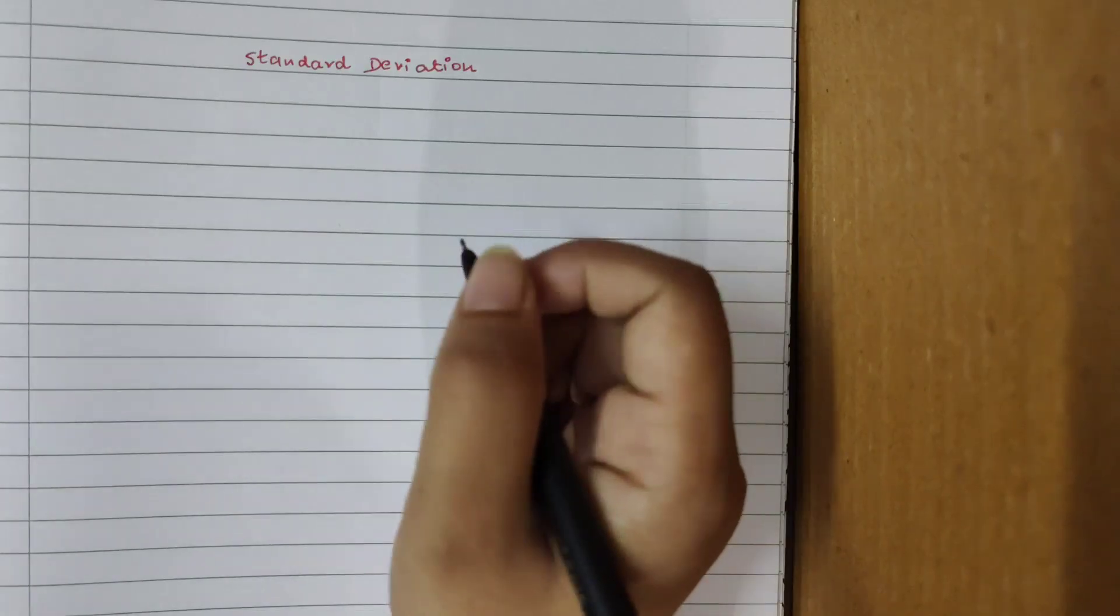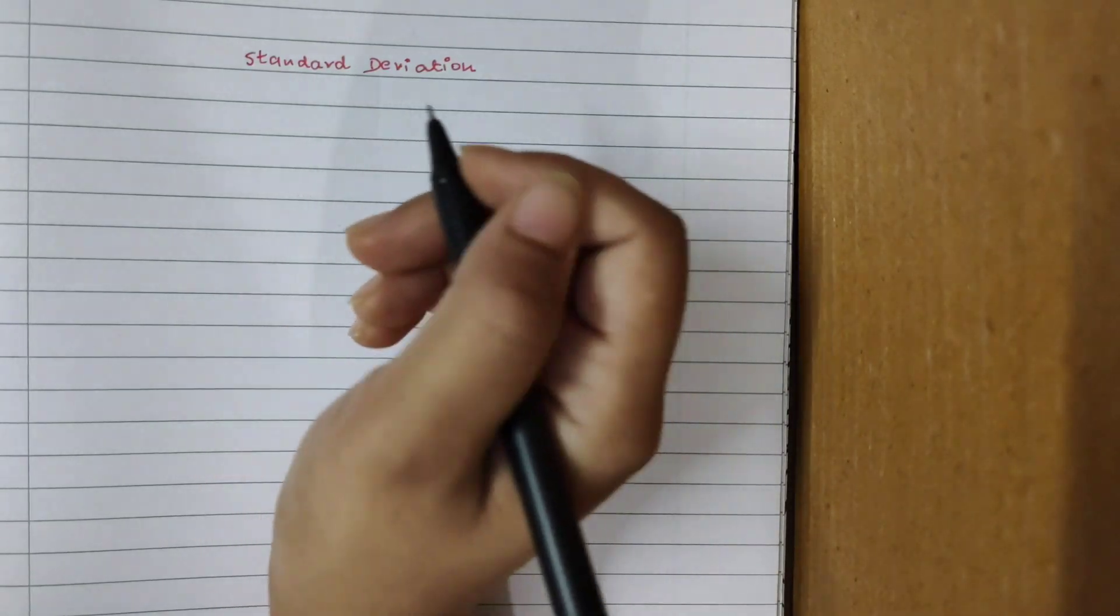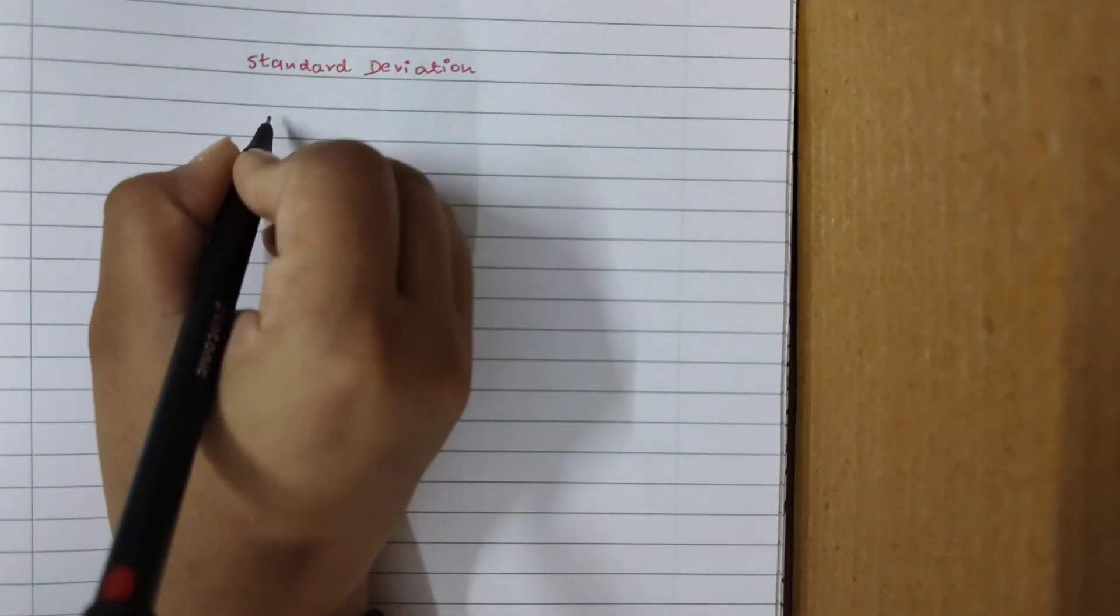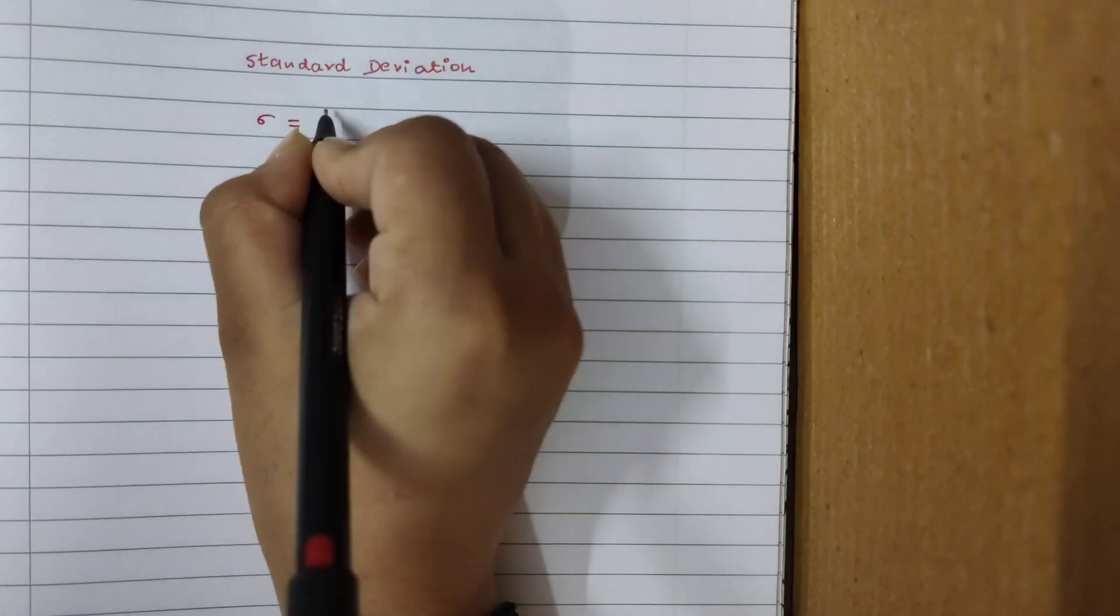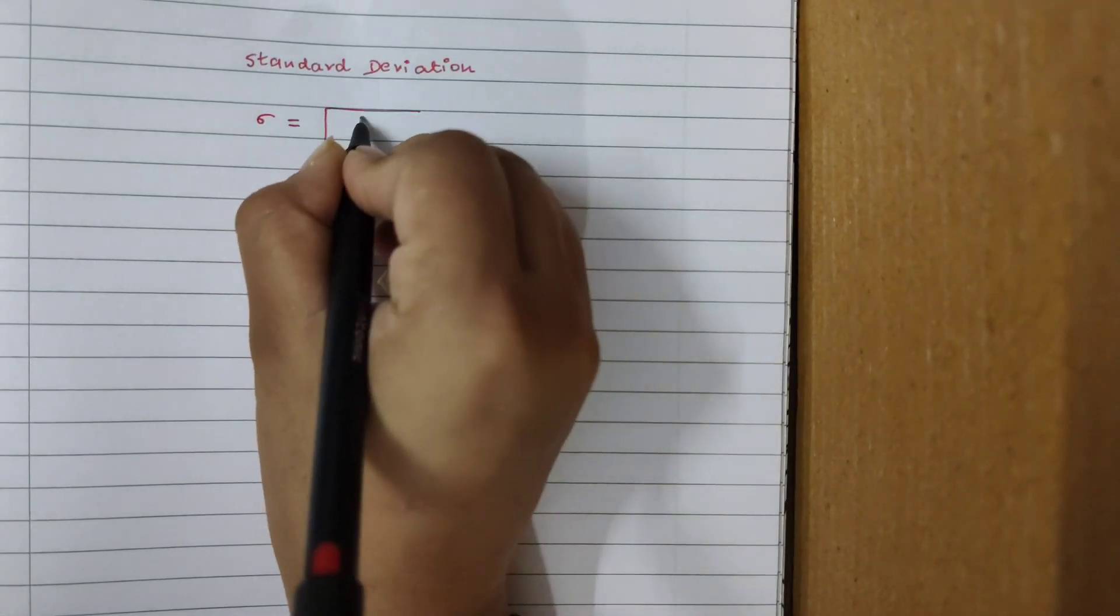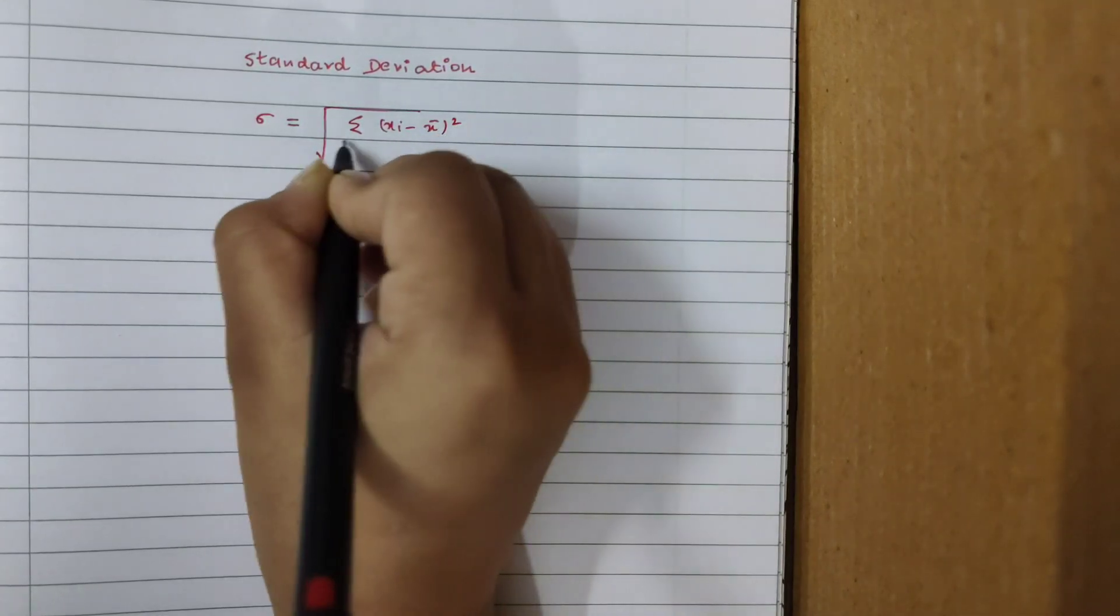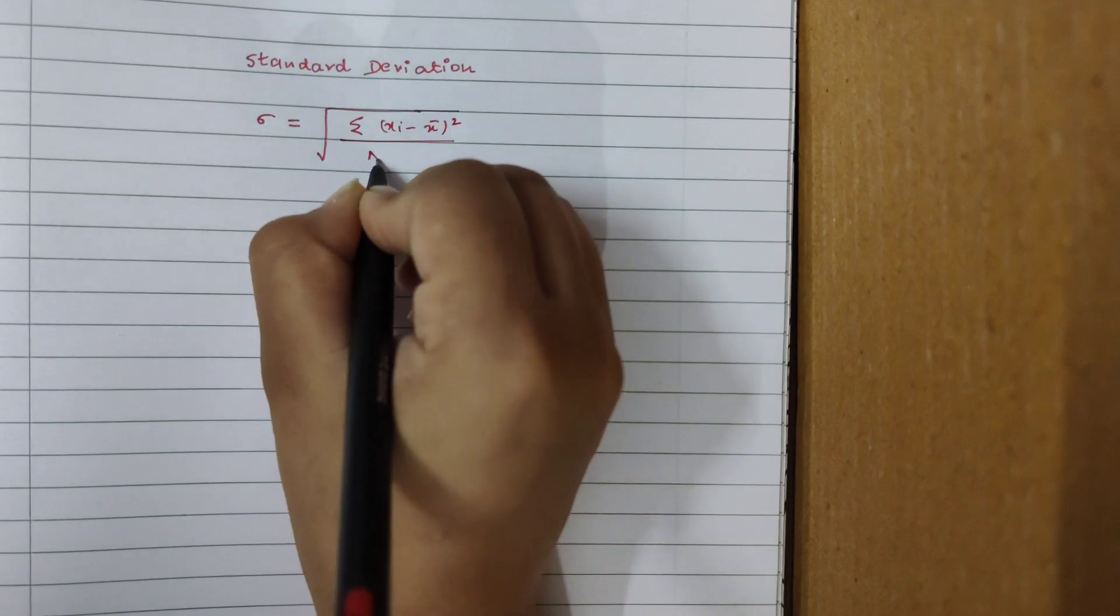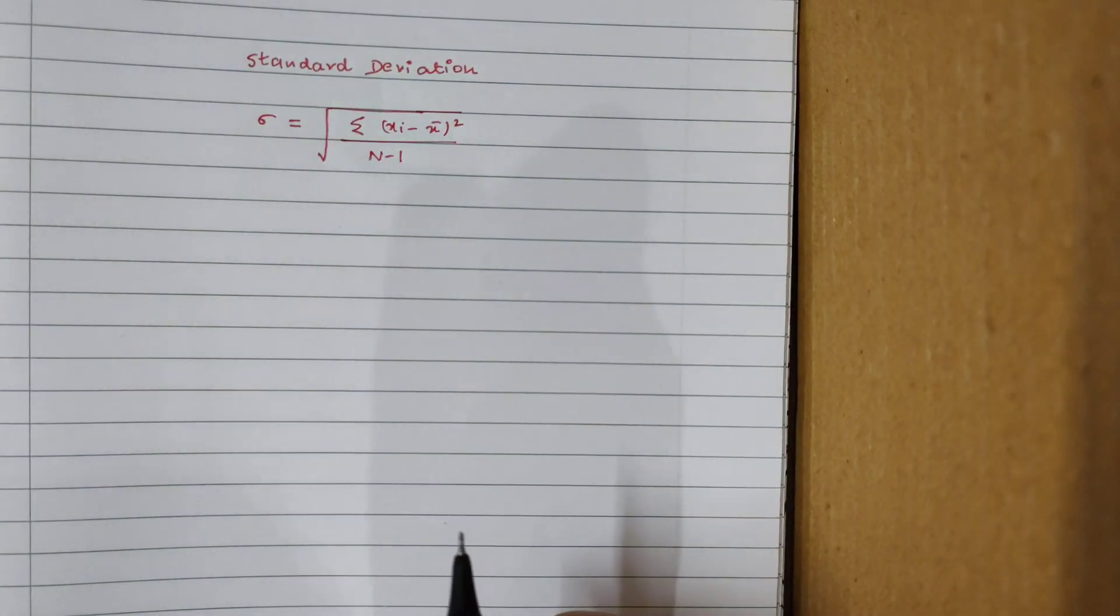Let's get started. Standard deviation is a very important analytical chemistry concept. We represent standard deviation as sigma. Let's start with the formula. It is basically square root of summation (xi minus x bar) squared divided by n minus 1. This is the formula. I will talk about the terms, but first let me tell you two major mistakes which I used to do as a student.